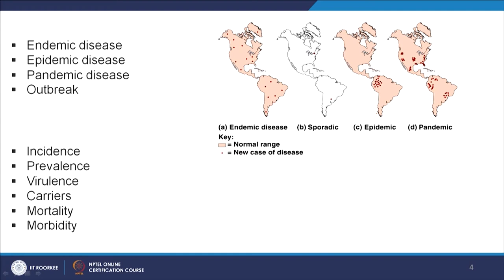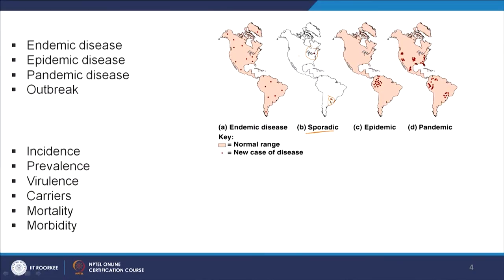Starting with sporadic disease: if every now and then you have some unique cases of a particular disease coming up that are not clustered geographically — one person here, one person there — these are called sporadic outbreaks. For example, dengue is now a seasonal disease in many Indian cities. During off-season, if we have only some sporadic cases, we cannot call it an outbreak.